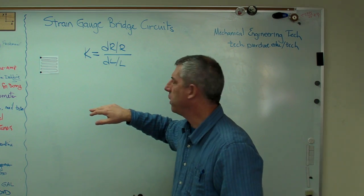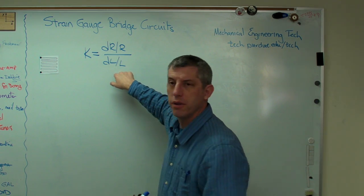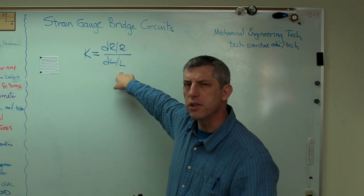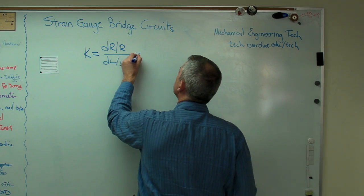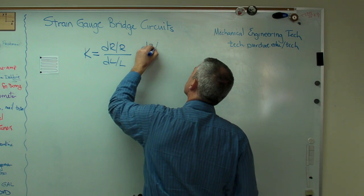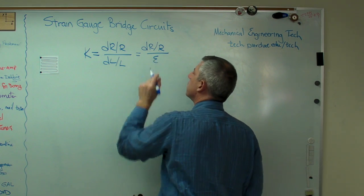Strain gauge resistances are always either 120 or 350 ohms. I've never seen anything else. Maybe there is, but it'd be pretty rare. And change in length over length. Well, change in length over length is strain, isn't it? So that's the same thing.